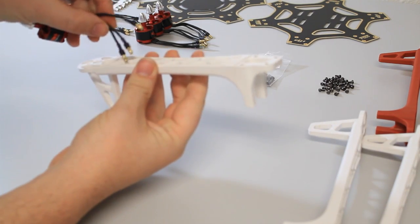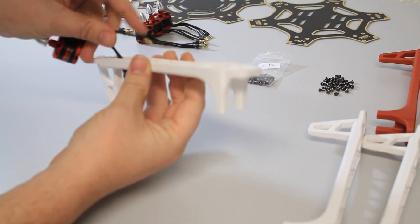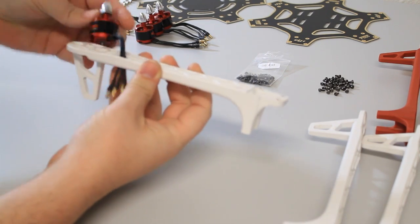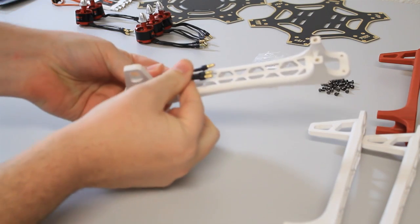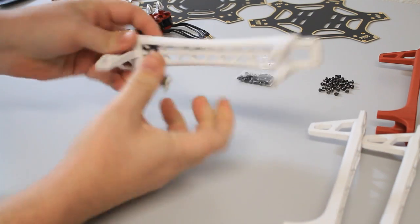I like to take the bullet connectors and feed those through the frame first. That way, when we're all done, we get the ESCs ready. Those will be up underneath and ready to mount there.